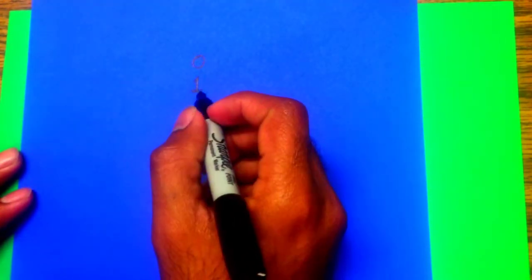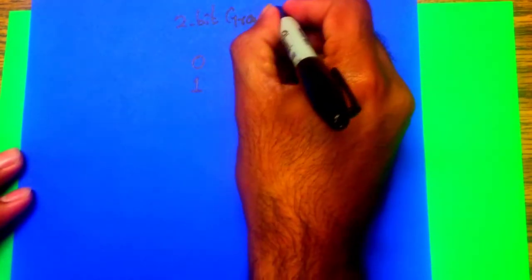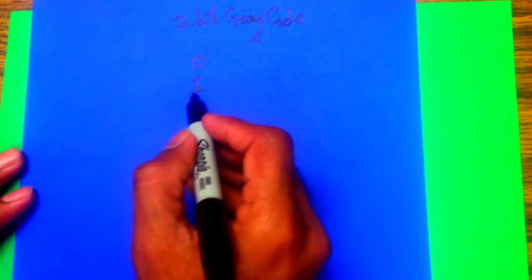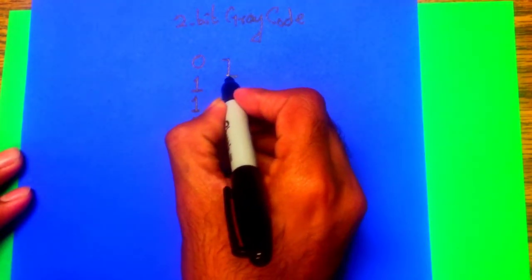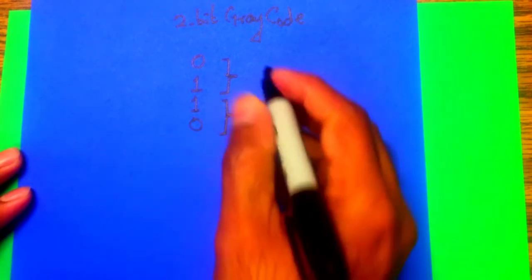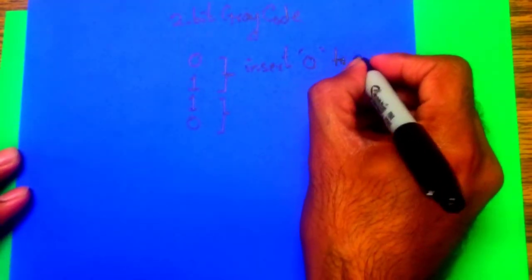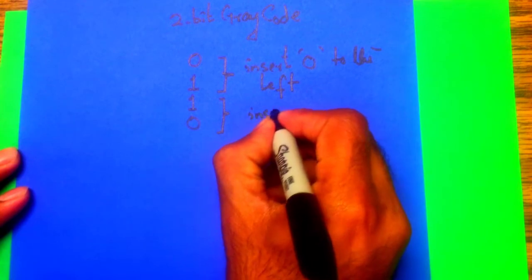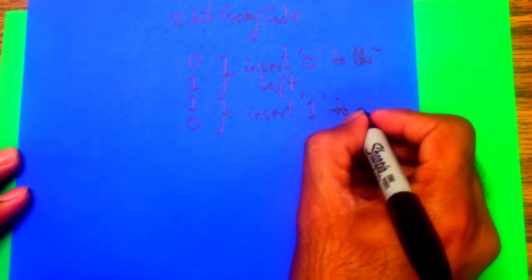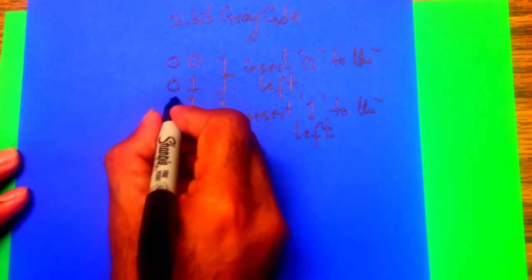In order to create a 2-bit gray code, you would basically take a mirror image of 0 and 1. Notice you have two halves. To the first half you insert zero to the left, and to the second half you insert one to the left.